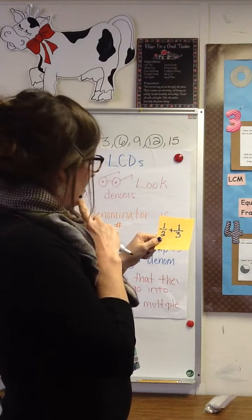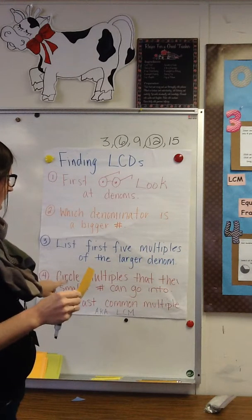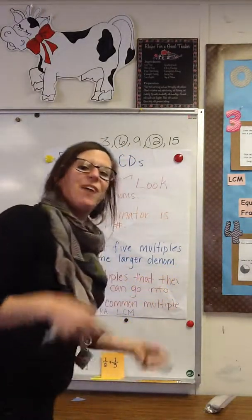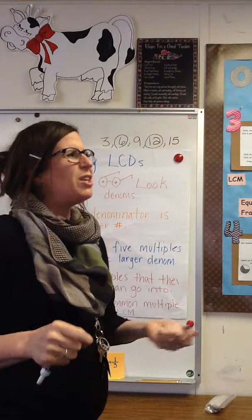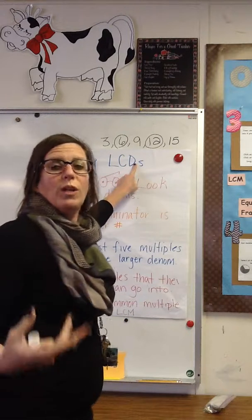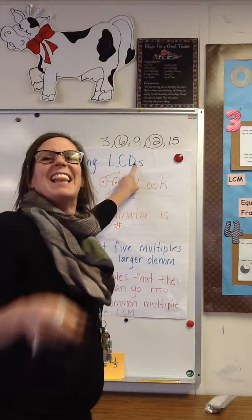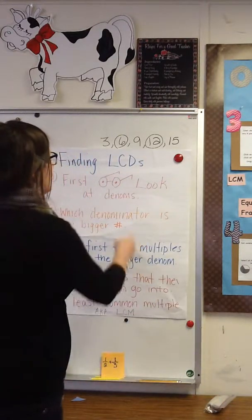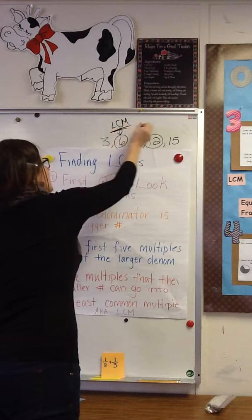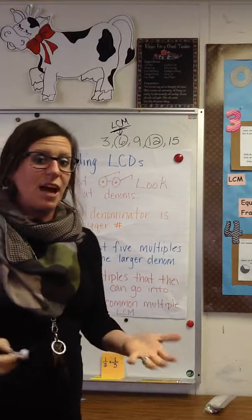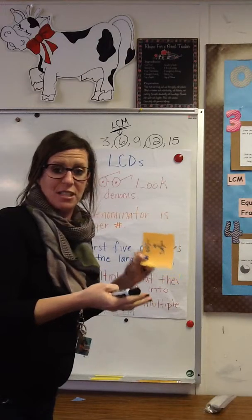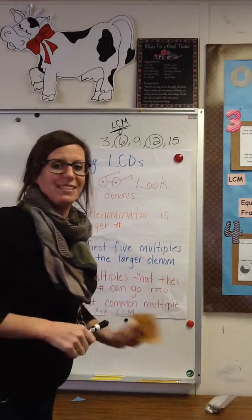Now I have to find the smallest of those common multiples — I'm going to find the LCM. What do you think LCM could mean? If LCD meant Least Common Denominator, LCM means Least Common Multiple. So this is going to be my LCM — my least common multiple — and that's the common denominator for two and three. I'm not going to get into making equivalent fractions yet; I just wanted you to know how to find a common denominator.